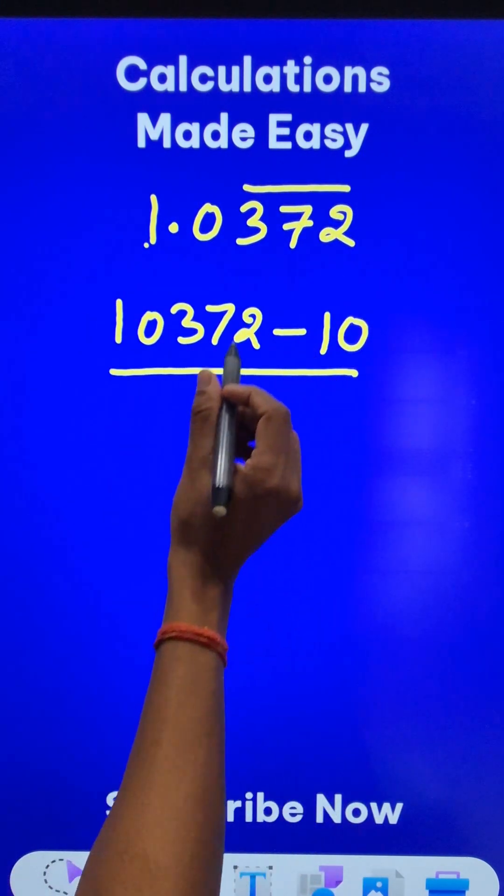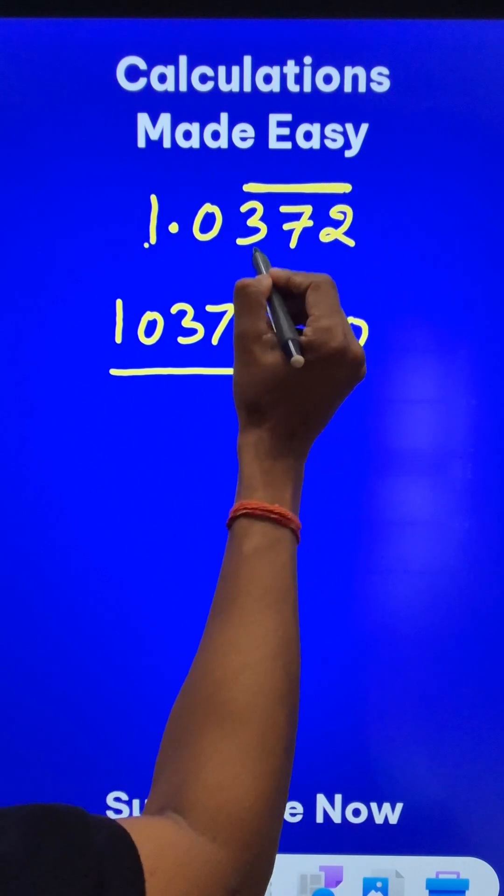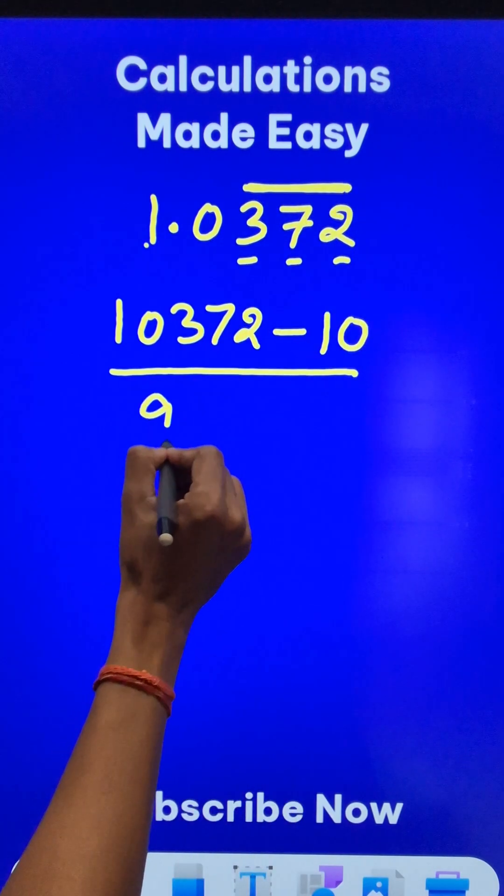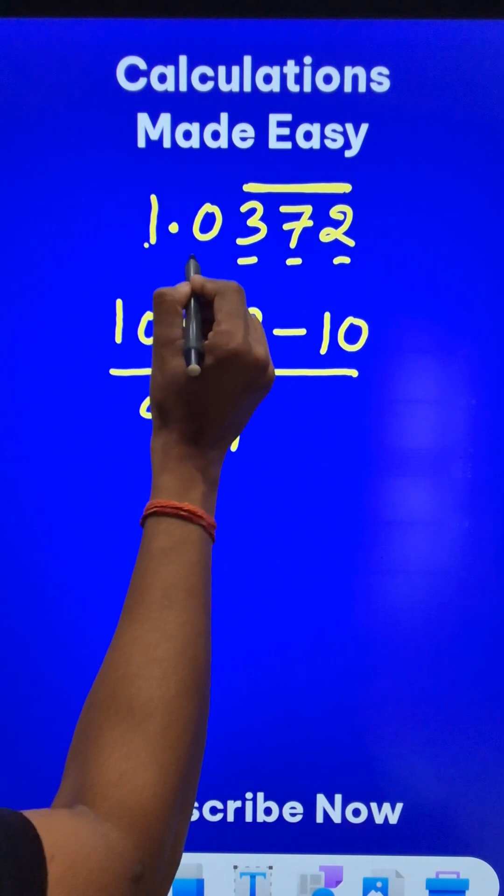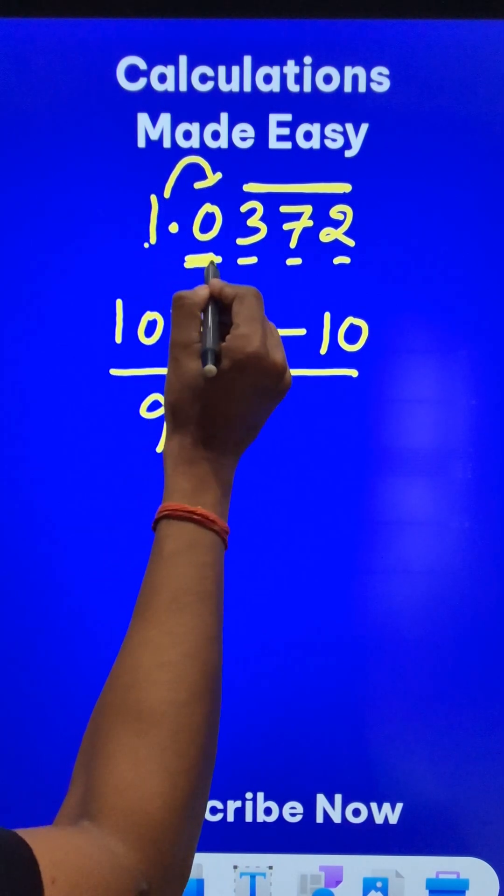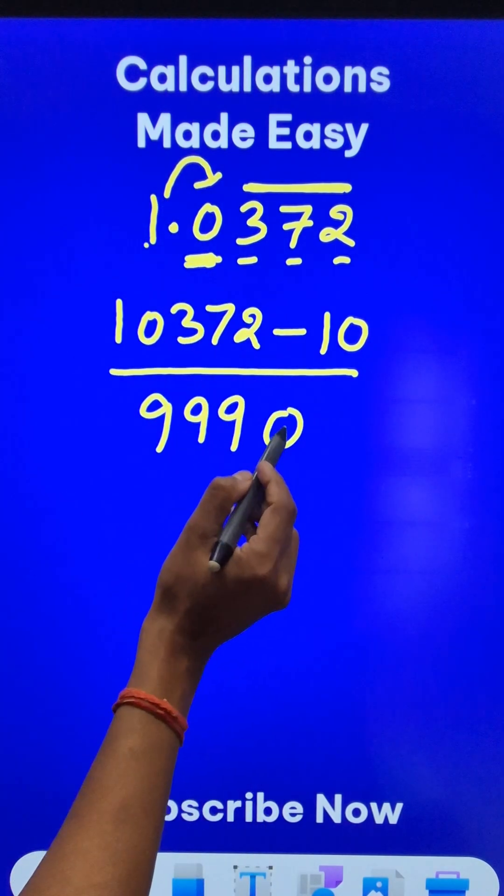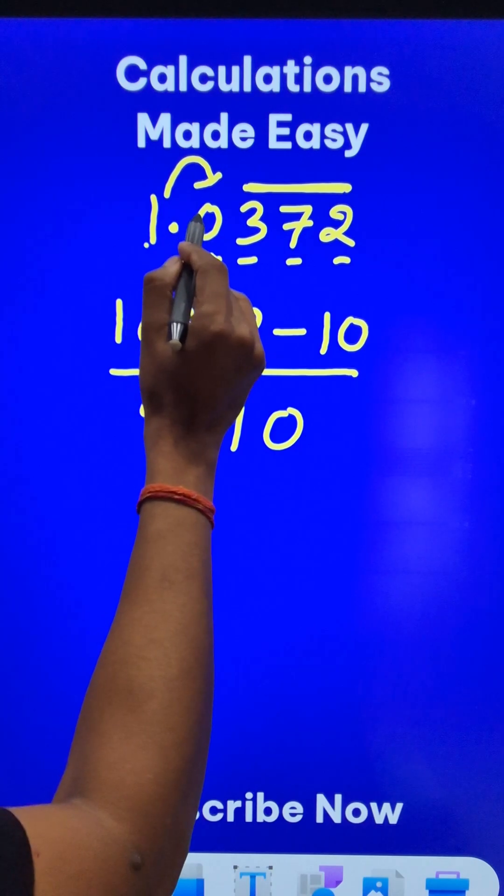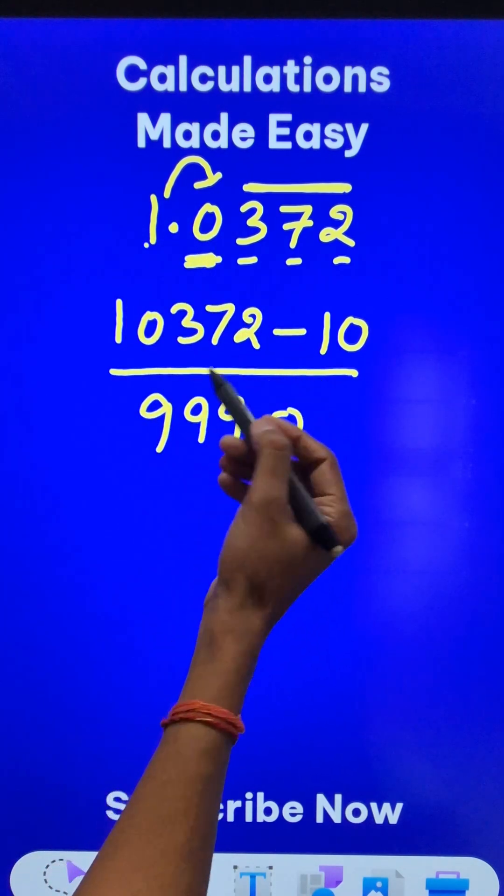So subtract 10 and now check how many digits you have the bar. 1, 2, 3 digits. So put 3 nines here and then how many digits after decimal does not contain a bar. So there is 1 digit so put a 0. If there is 1 digit put 1 zero. If there are 2 digits without bar here put 2 zeros. That is the rule.